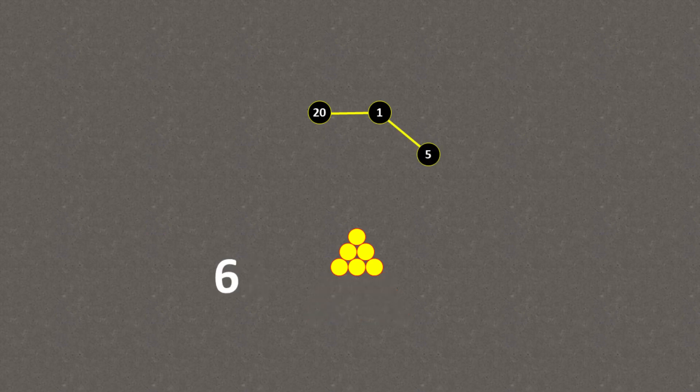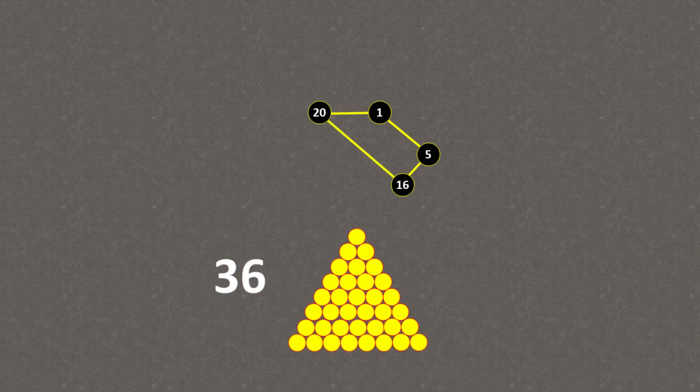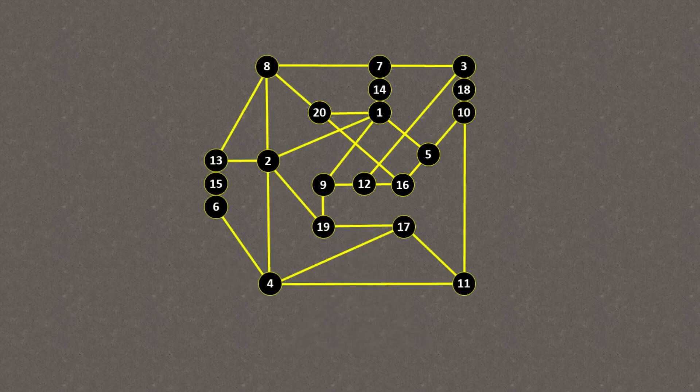5 can also be paired with 16. And 16 can be paired with 20 to make the triangle number 36. And carrying on like this, you'll build a graph of all the possible triangular pairs.